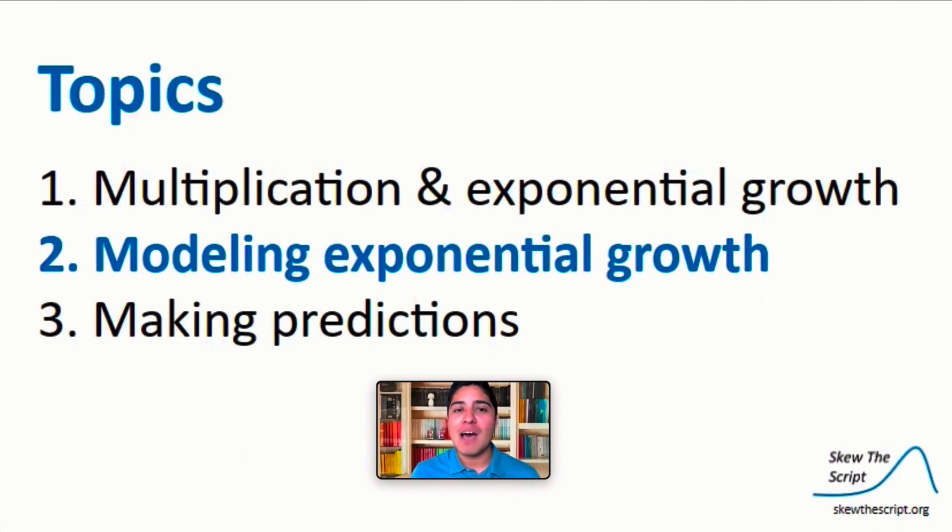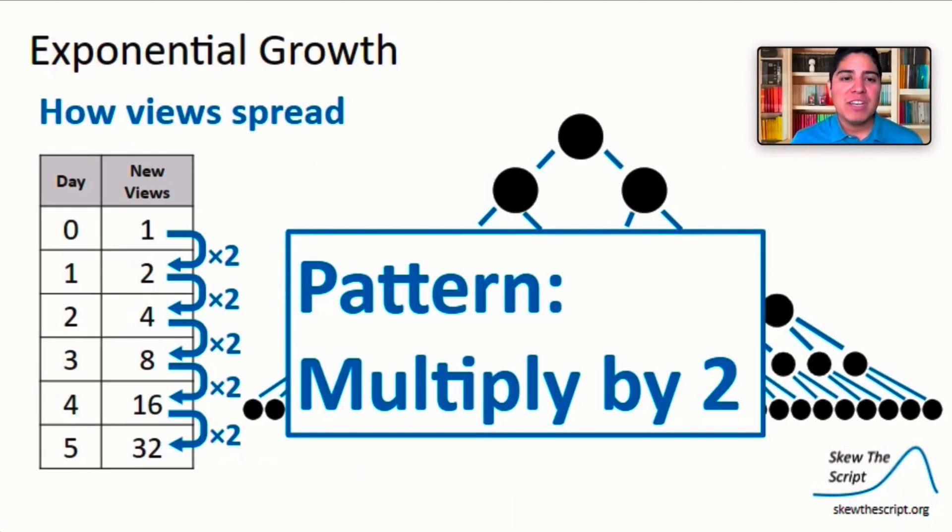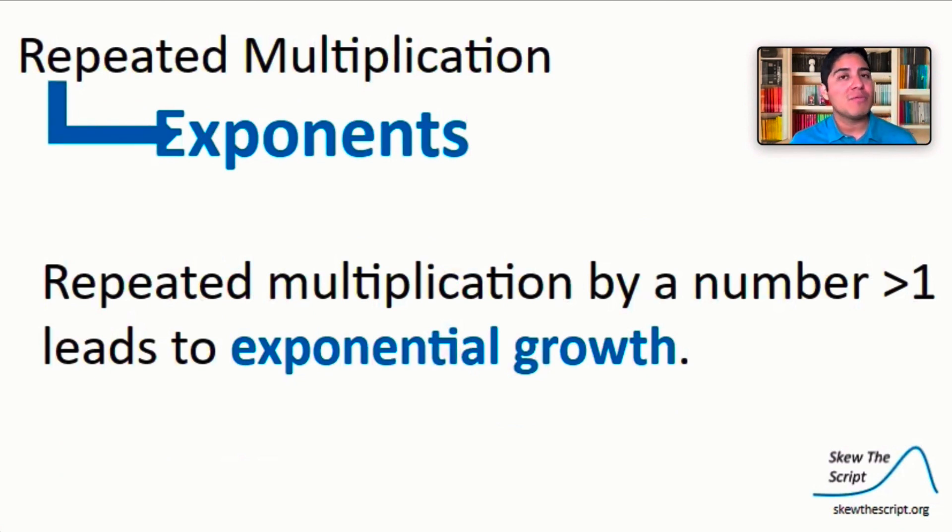Remember that we noticed this pattern in our table. The new views, or our y values, are being multiplied by two each day. Repeated multiplication like this can be represented using exponents. And if the repeated multiplication is by a number greater than one, this leads to exponential growth like we saw in the Nyan Cat model. Let's look at how this repeated multiplication can be represented with exponents.